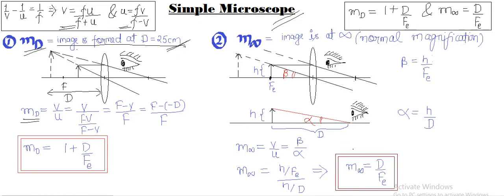They are just another form of lens formula: one by v minus one by u equals to one by f. We can convert this to get v equals to fu upon f plus u and u equals to fv upon f minus v.